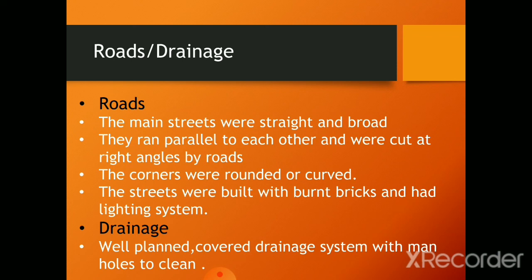Let us discuss the roads and drainage system of Harappans. The main streets were straight and broad. They ran parallel to each other and were cut at right angles by roads. The corners of the roads were rounded and curved so as to make it easier for carts to turn. The streets were built with burnt bricks, and some streets even had a lighting system with lamp posts.